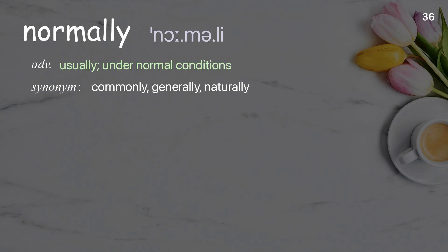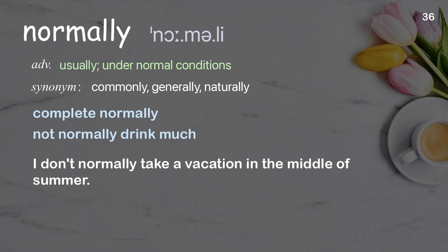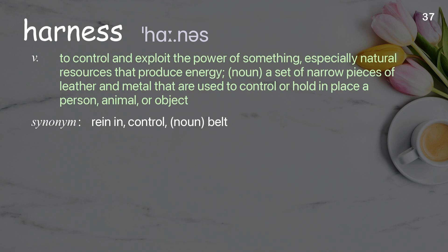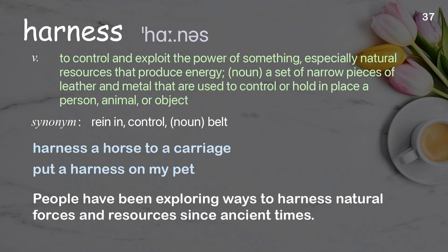Normally: Usually, under normal conditions. Harness: A set of natural resources that produce energy; a set of narrow pieces of leather and metal used to control or hold in place a person, animal, or object. Examples: Harness a horse to a carriage. Put a harness on my pet. People have been exploring ways to harness natural forces and resources since ancient times.